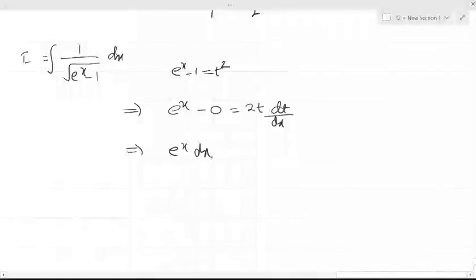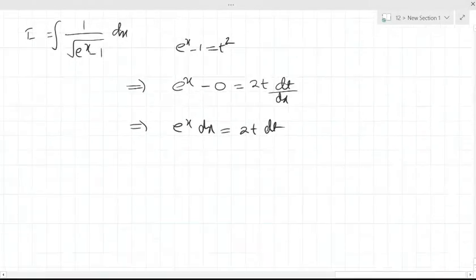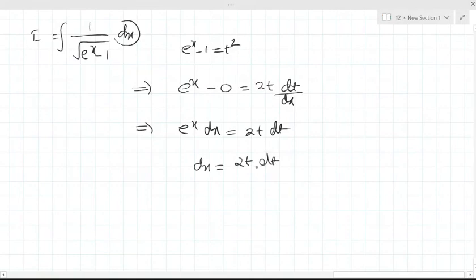x dx is equal to 2t dt, please focus on this question. We have dx here only in integration we have dx. Therefore, dx will be 2t dt upon e to the power x.